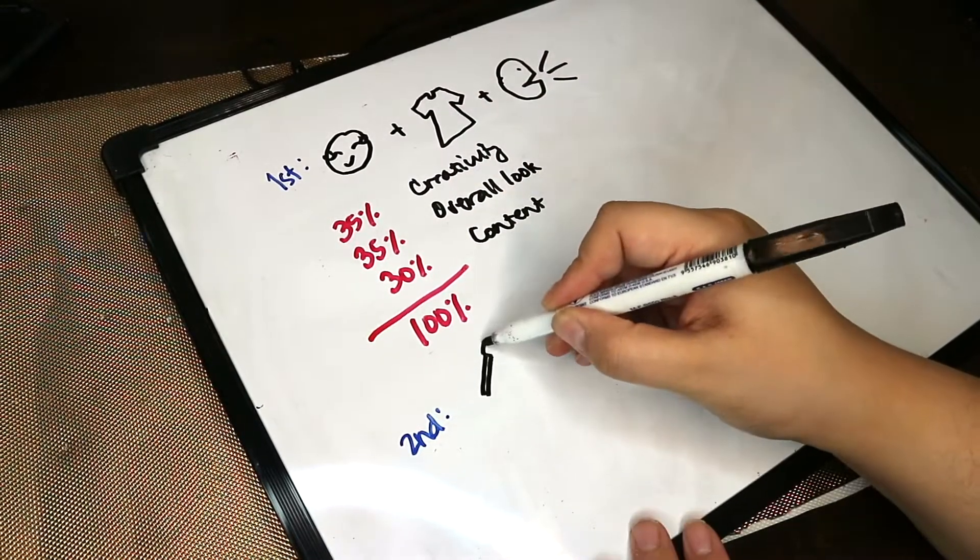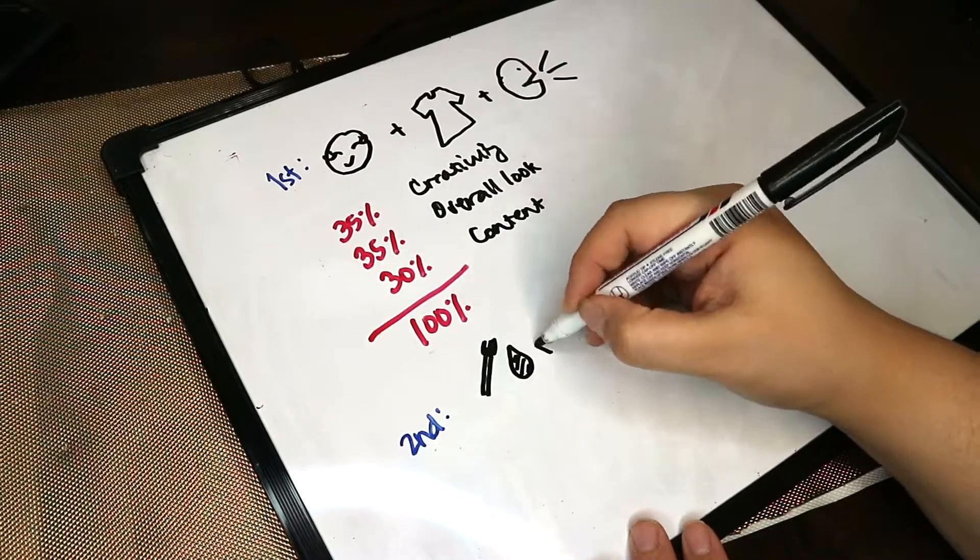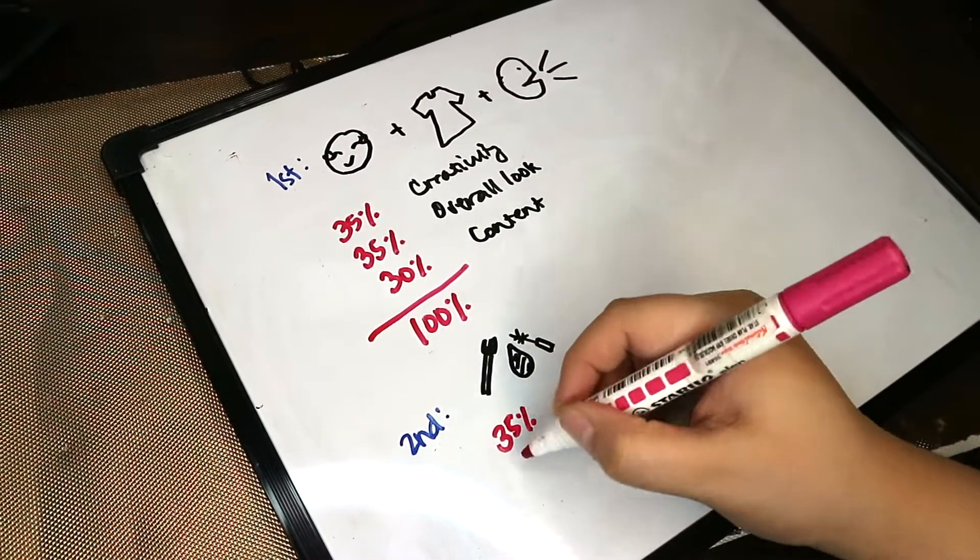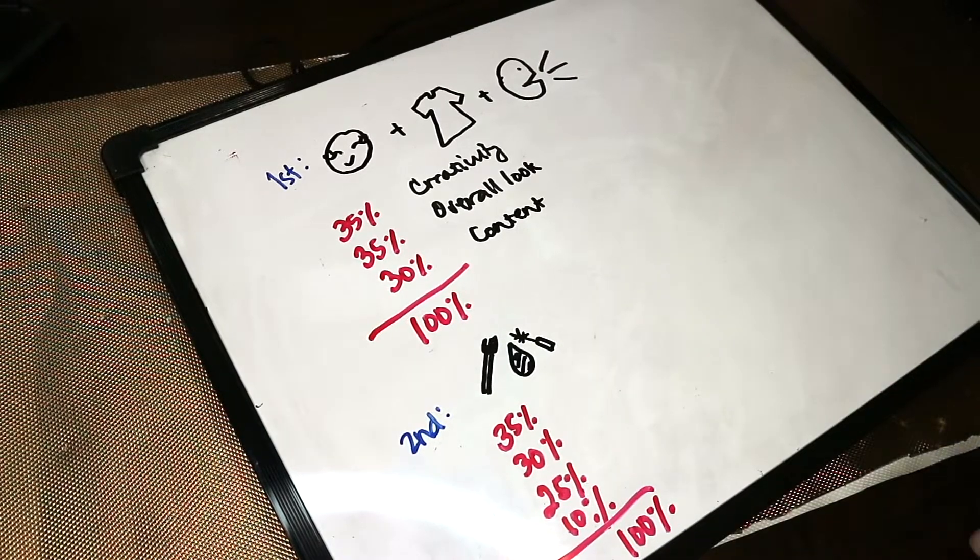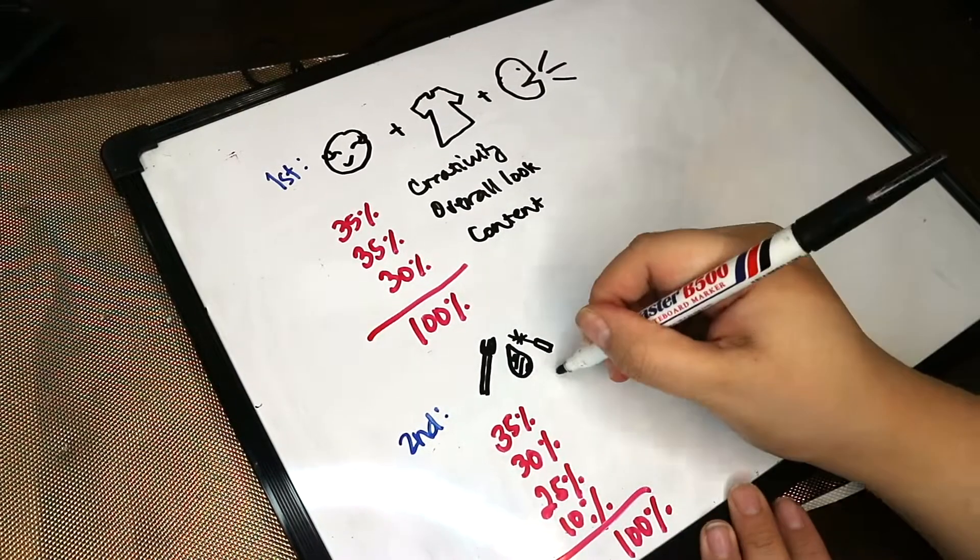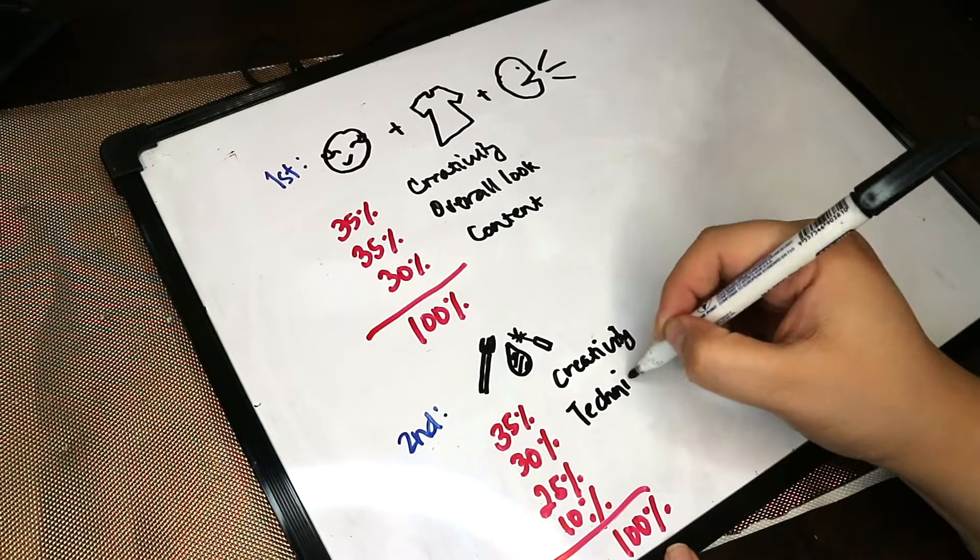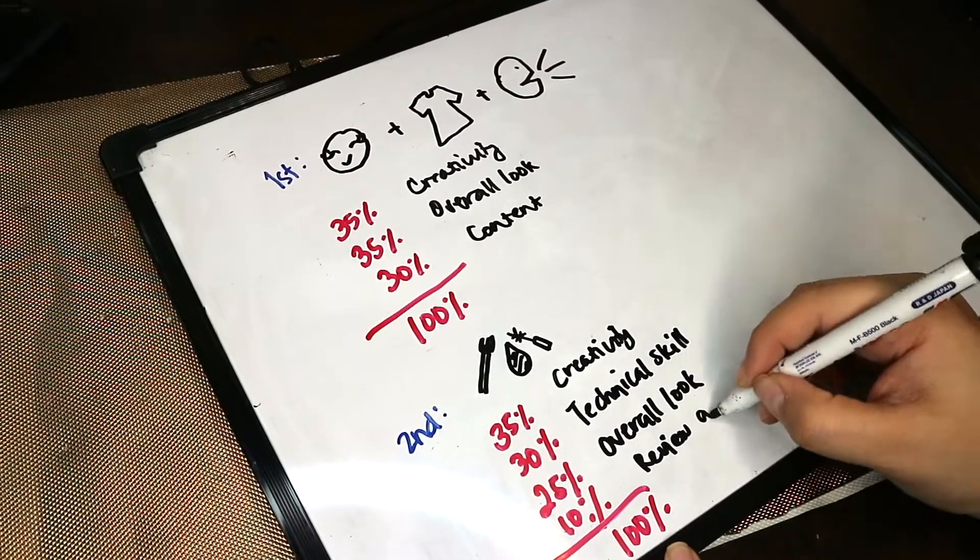For the second challenge, this is more on the makeup skills. I'm guessing this is more technical on the blending and application and everything else. So you will be judged 35% creativity, 30% technical skill, 25% overall look, and 10% reviewing ability.